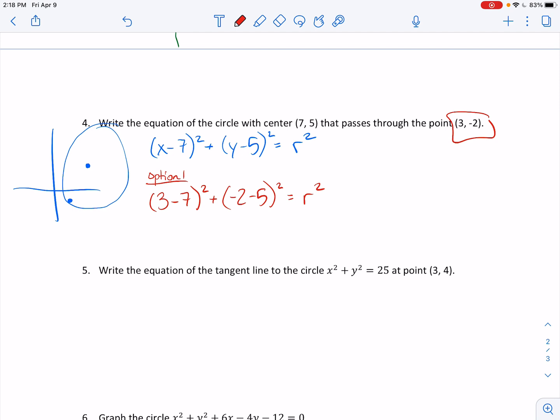Well, 3 minus 7 is negative 4. Negative 4 squared is 16. Then that's negative 7 squared is 49. And so my r squared value is, I just got 65 is equal to r squared. So they just said write the equation. Here's my equation. X minus 7 squared plus y minus 5 squared equals, well, r squared we just said was 65. Now if they ask you what's the radius, you should tell them it's the square root of 65, but they didn't actually ask that question.